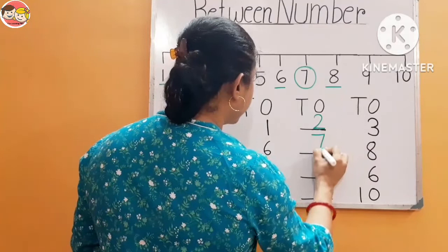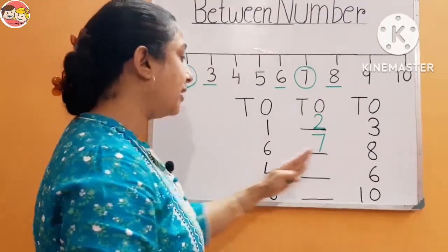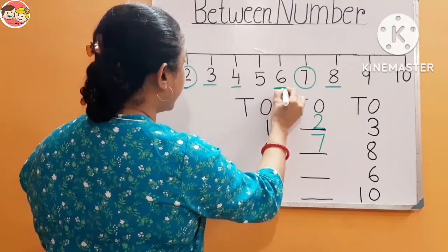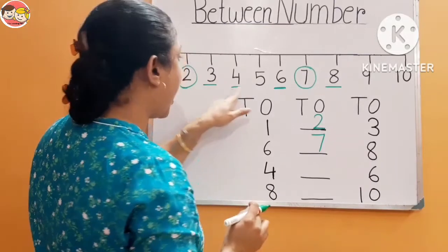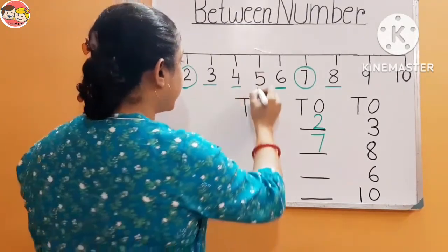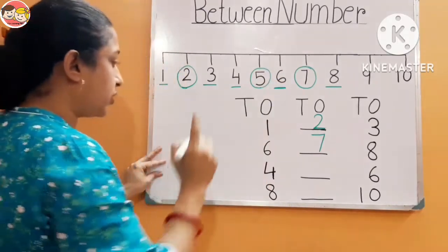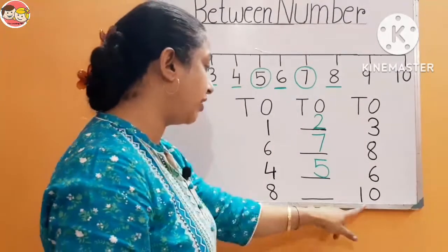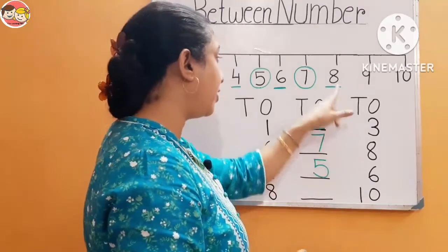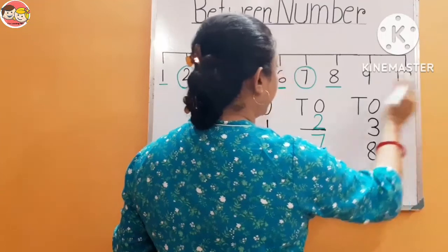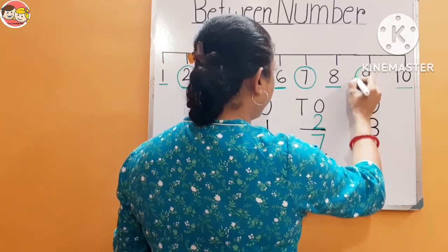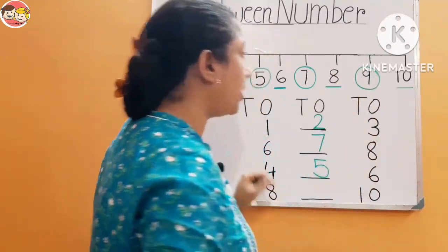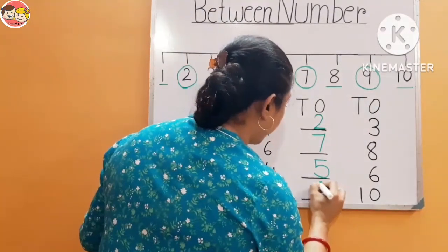Next: 4 and 6. Look at the number line — this is number 4 and this is number 6. What comes between 4 and 6? Number 5 — this is the middle/between position — so here we write number 5. Next: 8 and 10 — what comes between 8 and 10? This is number 8 and 10 — dono ke beech mein — the middle position — number 9. So number 9 comes between 8 and 10 — here we write number 9.